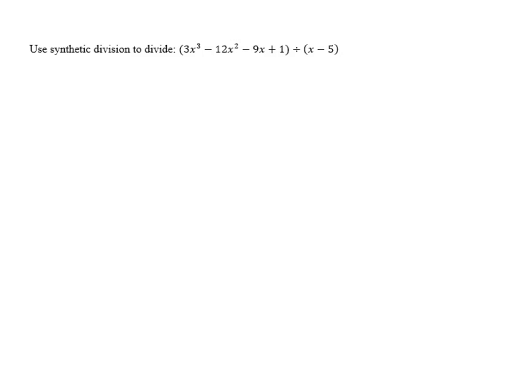Use synthetic division to divide 3x³ - 12x² - 9x + 1 by x - 5. We'll write the coefficients of the dividend inside: 3, -12, -9, and 1. Then the value of c goes on the outside: 5.